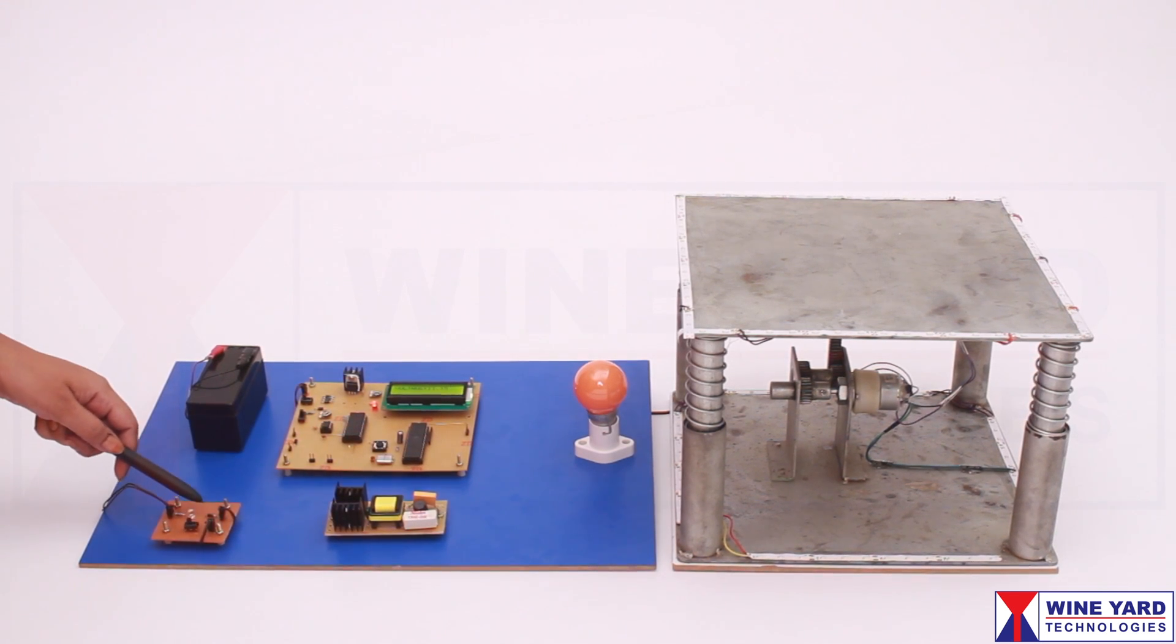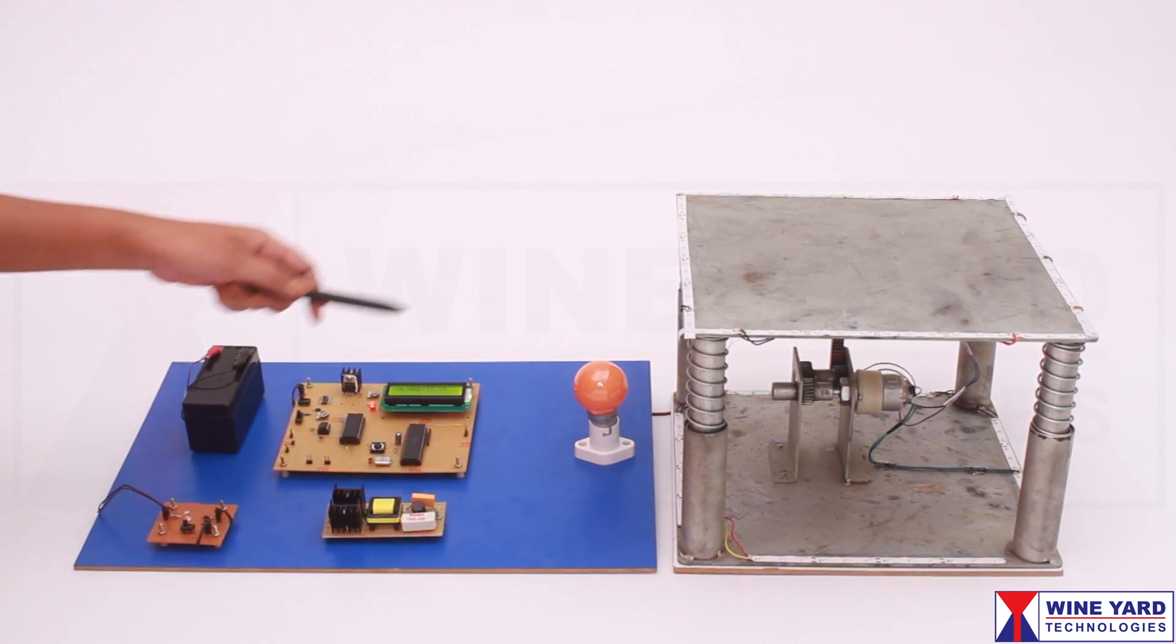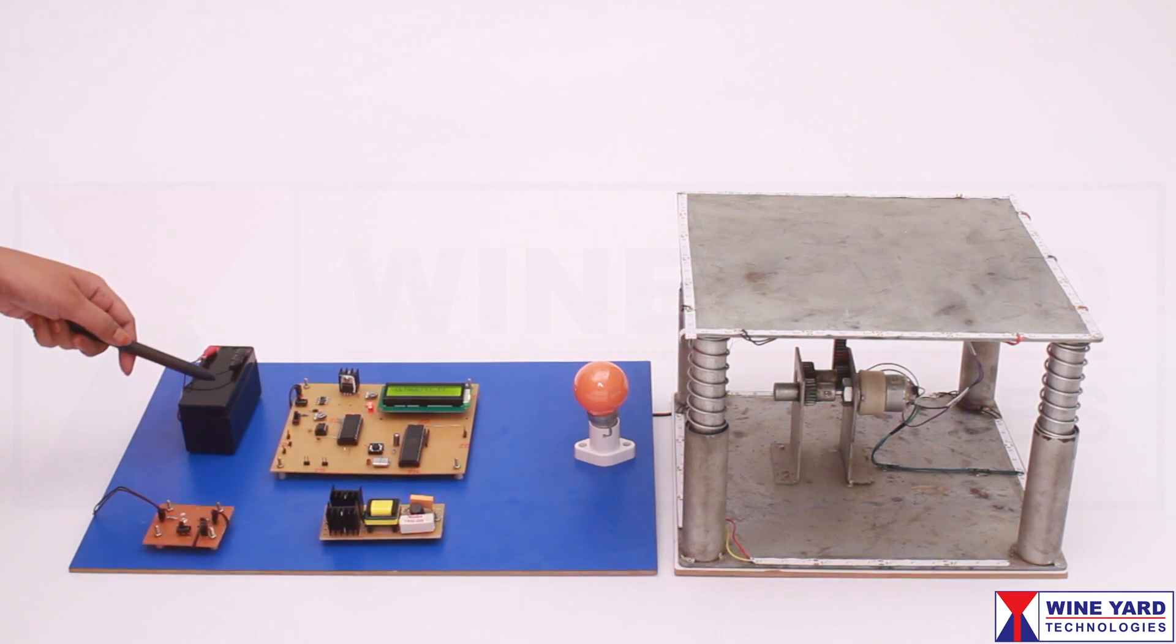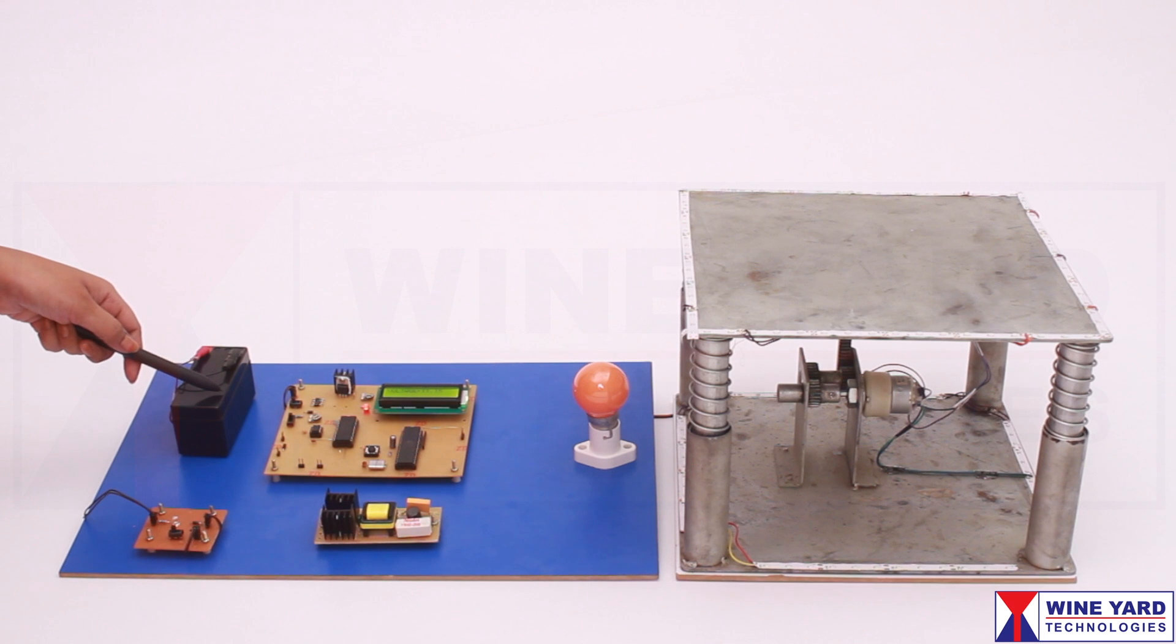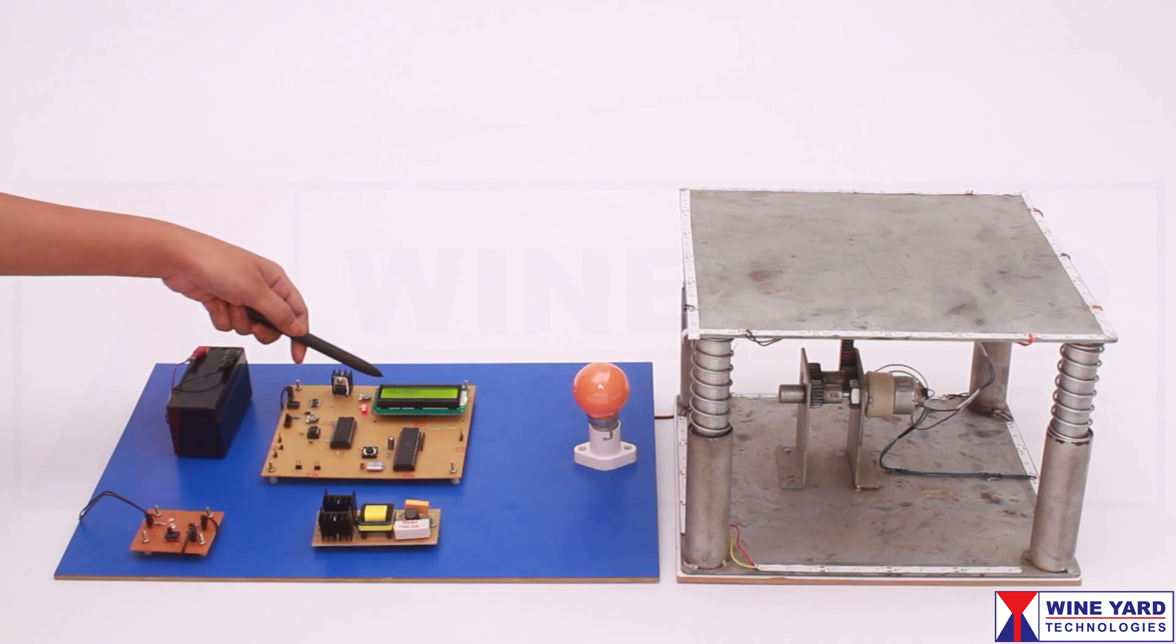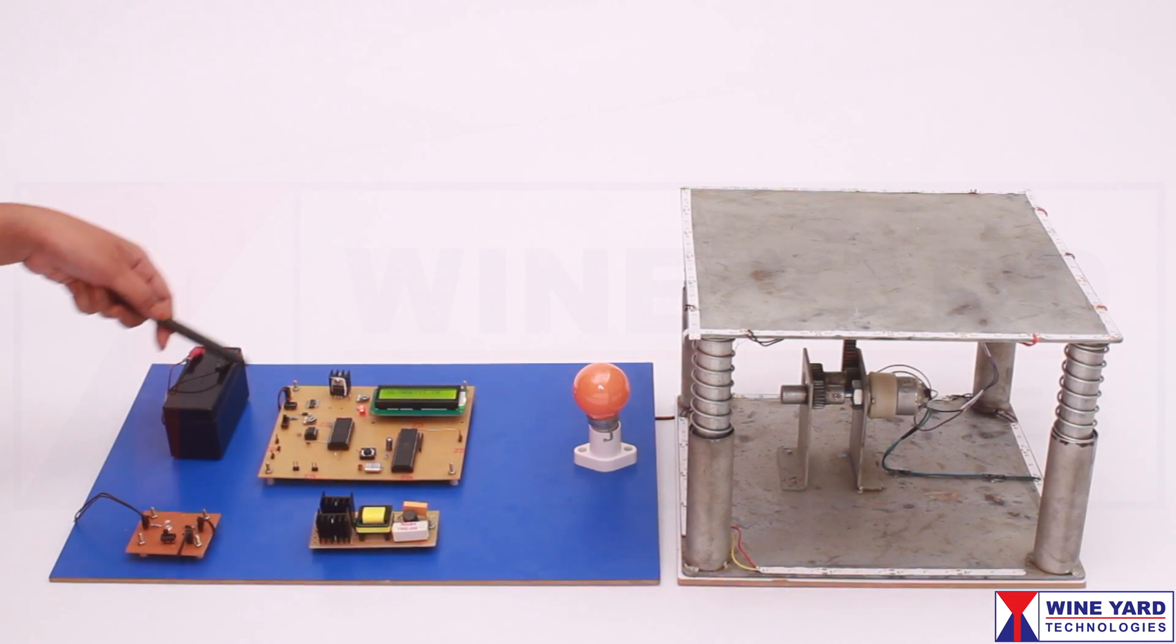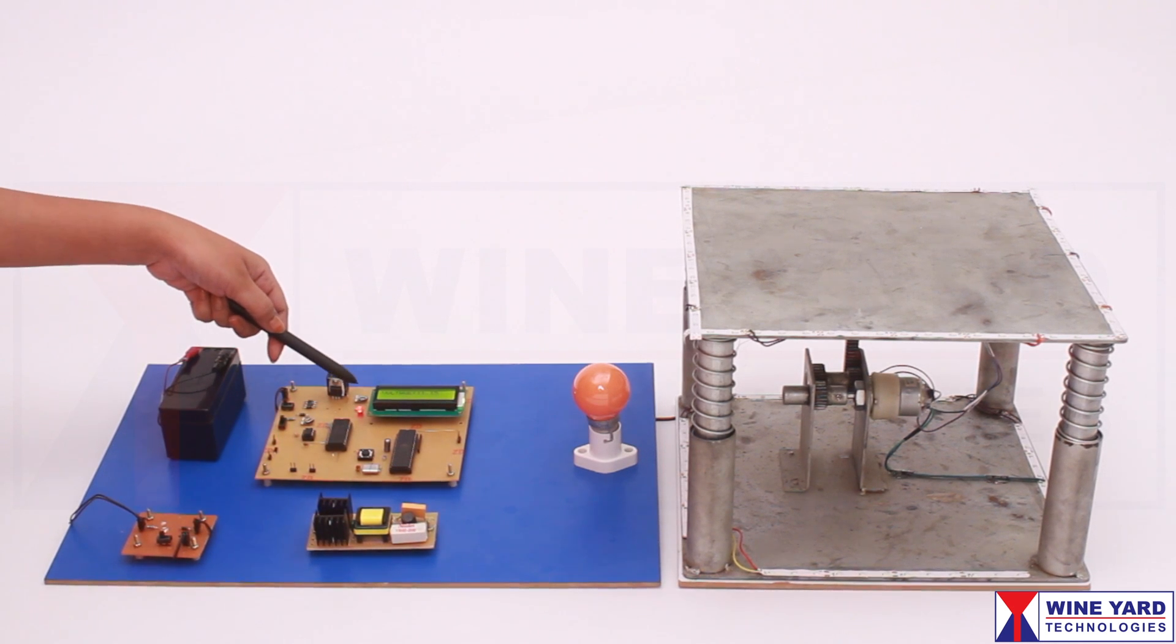This diode enables unidirectional current flow, from the generator to the battery. We are using this ADC to measure the battery voltage. The LCD displays the battery voltage. You can adjust LCD contrast by varying this preset.